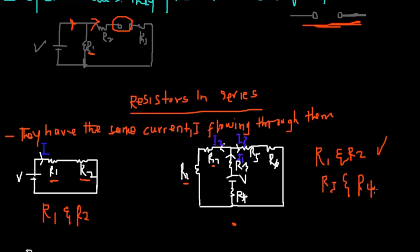Looking at R5 and R6: current I1 passes through R2 and R1, and current I flows through R3 and R4, but when the current splits further we have I3. Only current I3 passes through R5 and then R6. We can therefore conclude that R5 and R6 are in series because the same current I3 passes through both of them.